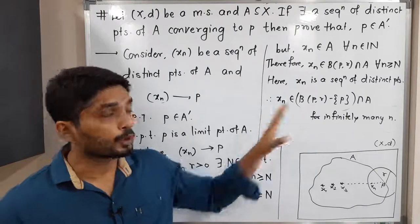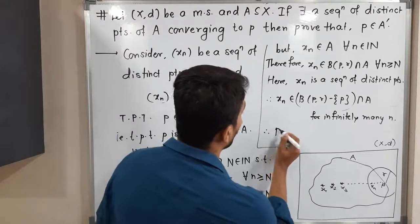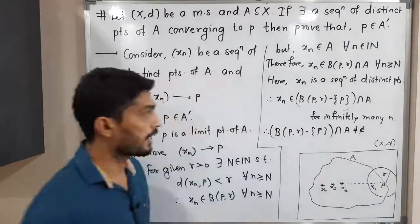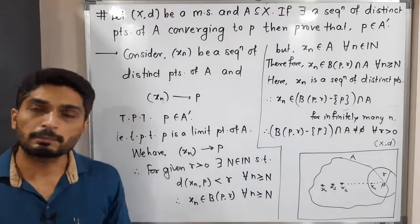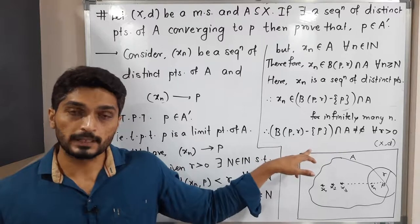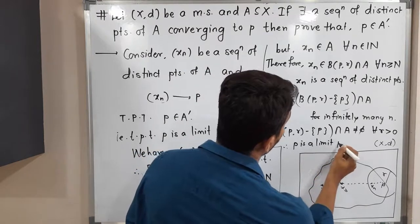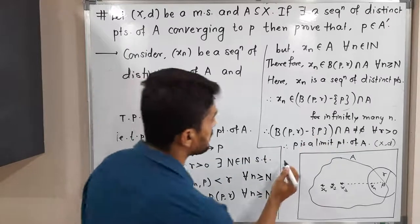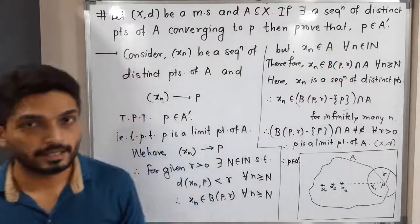So what it means is that the intersection is non-empty. Therefore, the open ball with center P and radius R, minus the singleton {P}, intersected with A is not equal to the empty set. This is true for every R greater than 0, since initially we started with for given R greater than 0. You are familiar with this definition — yes, this is the definition of a limit point. So therefore, P is a limit point of A, and therefore P belongs to A dash. So we started with the given information and finally proved that P is in A dash.